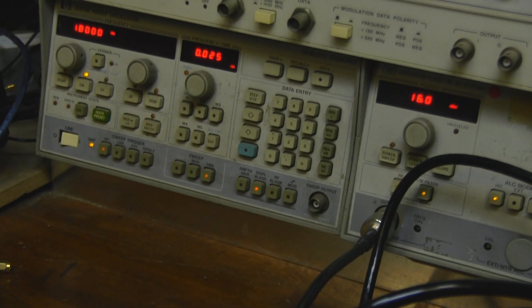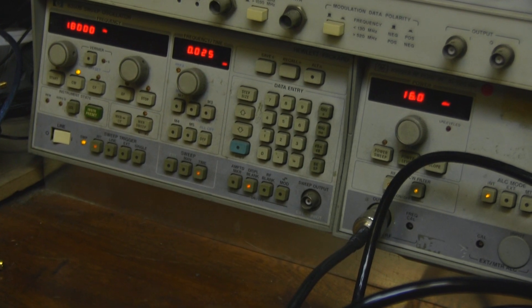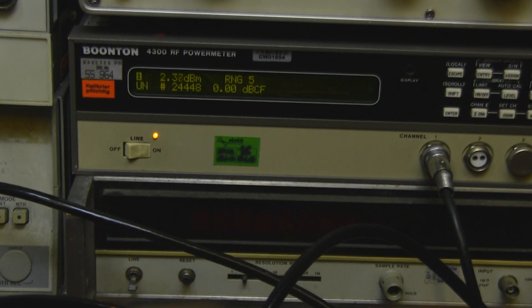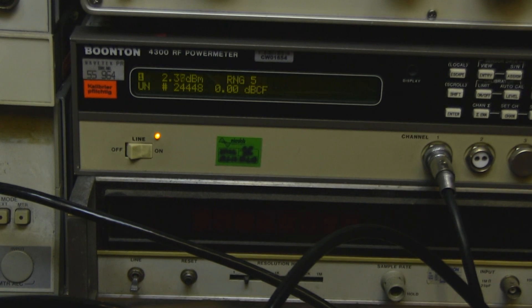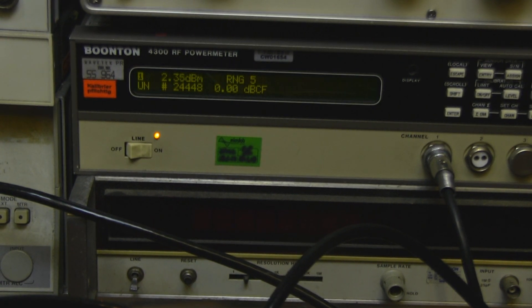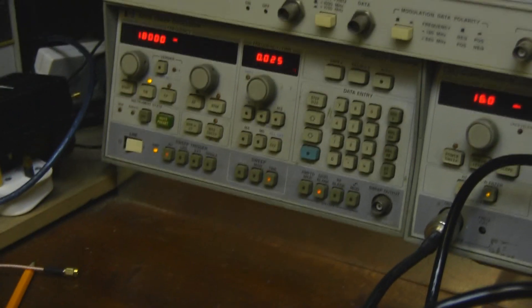At the minute I'm putting in a signal of 1800 megahertz at 16 dBm. If we look at the power meter, we're only getting 2.38 of a dB through that coax. We're losing a lot of energy through that coax. As I said, further up you go in frequency, the worse the loss gets.